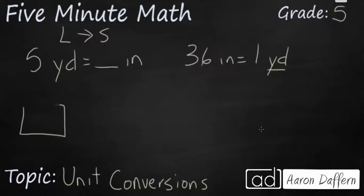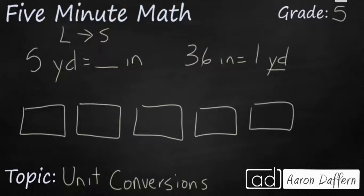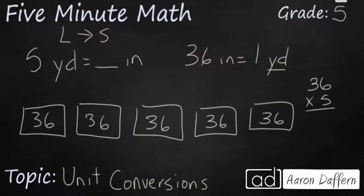If I wanted to represent this with five boxes, let's pretend each of these boxes are going to be a yard. Inside each of those yards are going to be 36 inches. Well you'll see I have five sets of 36. So in this case if I wanted to figure out how many inches are in five yards I could add 36 five times or I could simply use multiplication.